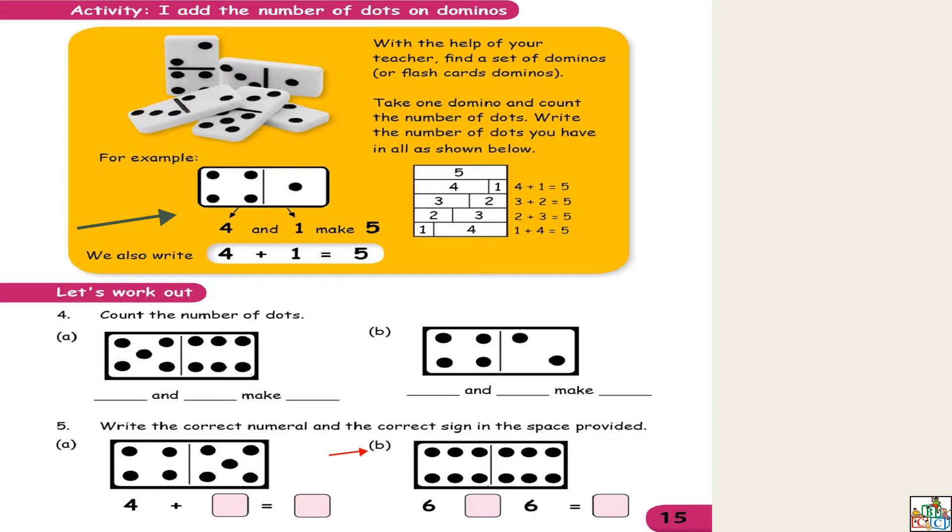So, we are going to count the dots on them. And then we're going to add them together. Look at the grey arrow. Can you see the domino here? So, on one side, how many dots do we have? We have four dots. Can you see? And then on the other side, we have one dot. Can you see this? Yes.